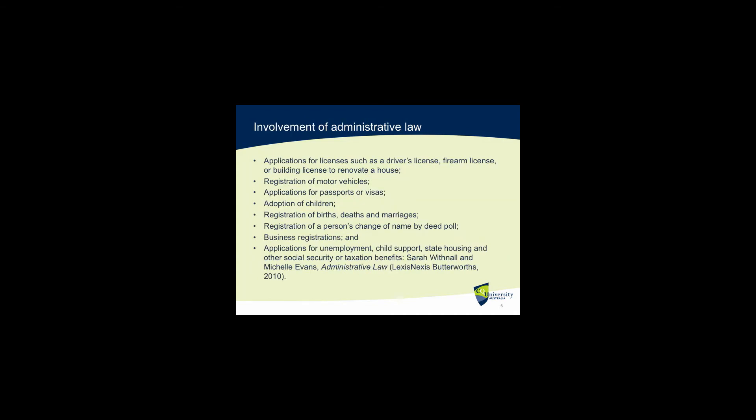We can see the impact of administrative law in our daily activities by looking at these examples. Administrative law can be invoked in relation to applications for licenses, such as driver's licenses, firearms licenses, or building licenses to renovate a house. When you make an application for licenses, or the government turns you down, or fails to make a decision on your application, you can invoke administrative law to test that decision. It can also relate to the registration of motor vehicles, applications for passports or visas, even the adoption of children, the registration of births, deaths, and marriages, and the registration of a person's change of name by deed poll.